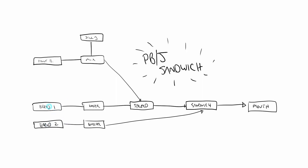It looks super scary and complicated, right? But every single thing that you do to build that sandwich is one step, and each step is a node. We have our ingredients — two pieces of bread, each one toasted and put together, a mix of peanut butter and jelly spread on it, bread on top. And that's really all that nodes are — each node is a step in the recipe.